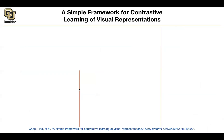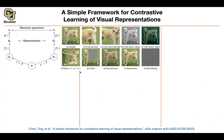Let's move on to a simple framework for contrastive learning. We already learned all of the details, so this one is going to be fast. You take an image and do two different types of transformations on it.